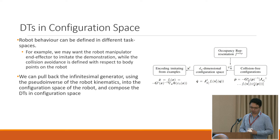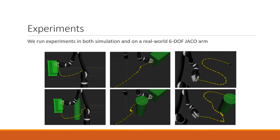We run experiments in both simulation and on a real-world 6DOF robot arm. In simulated examples, we show demonstrations of lifting a box, pushing a box, and drawing the character S. We then add additional obstacles and are able to smoothly avoid them while carrying out the motion.